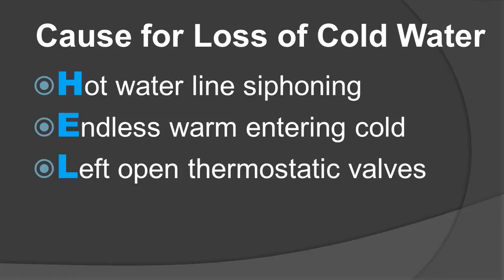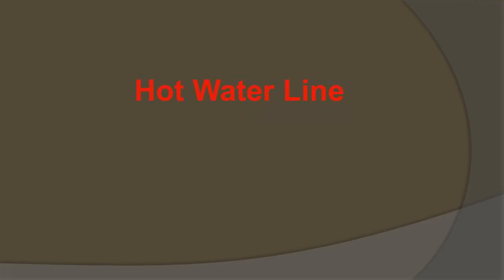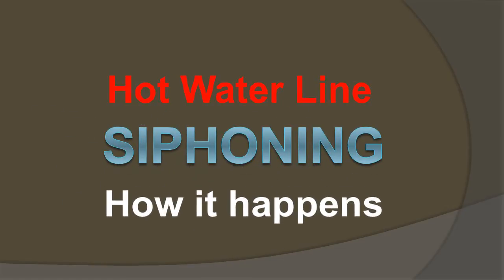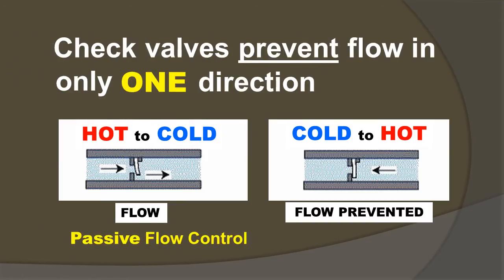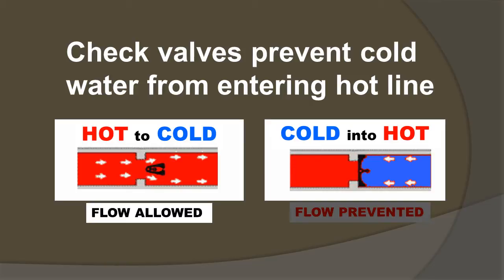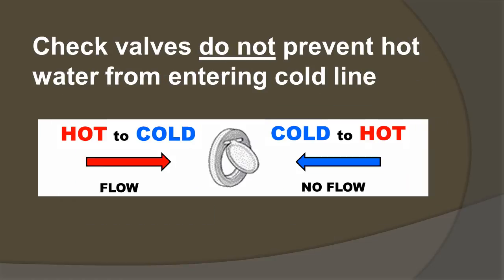Left open thermostatic valves and passive check valves contribute to hot water line siphoning. Check valves prevent flow in only one direction. In retrofit hot water circulation systems, check valves prevent cold water from entering into the hot water line, but they do not prevent hot water from entering the cold water line.